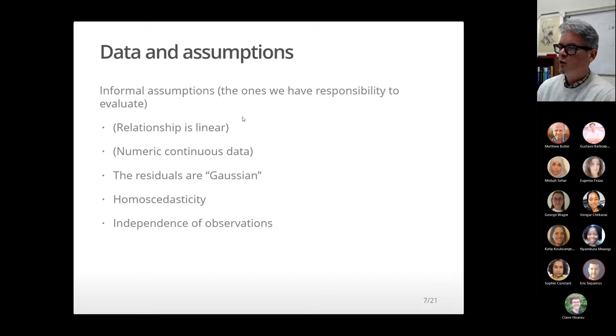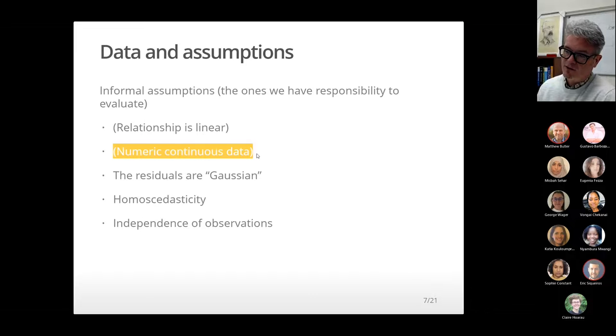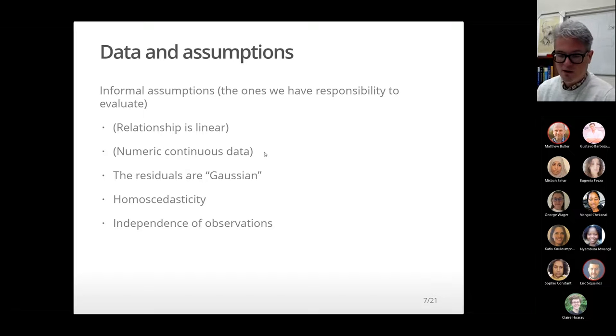Homoscedasticity is something we've mentioned before. All it means is that there's equal variance of the y variable across the whole length of the x variable. And we'll look at that graphically. And then finally, we make an assumption that there is independence of observations. Something that would not be independent would be if you measured say five individuals and you measured those five individuals three times each. Those would be non-independent because you measured them within the same individual. For simple linear regression, all of the observations must be independent.